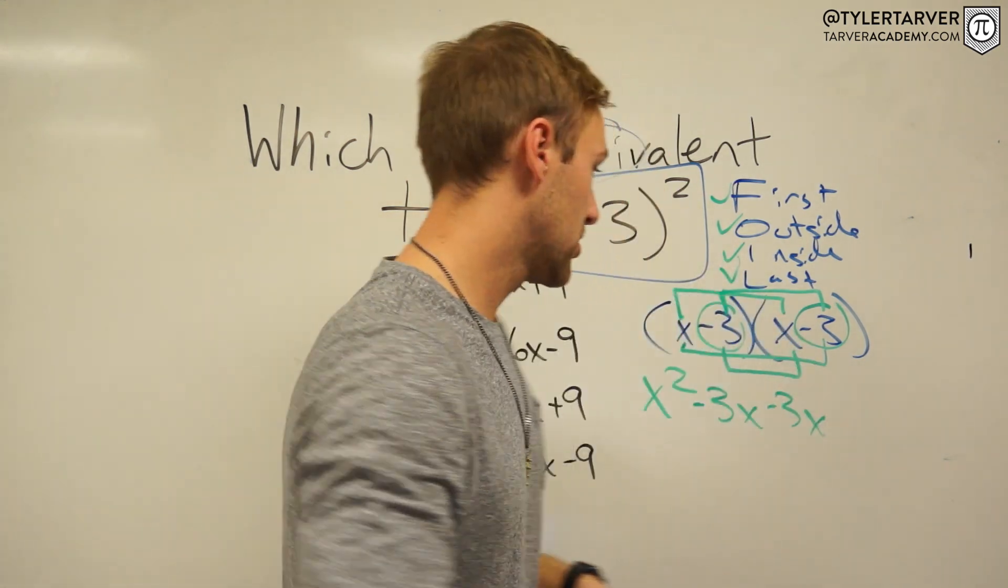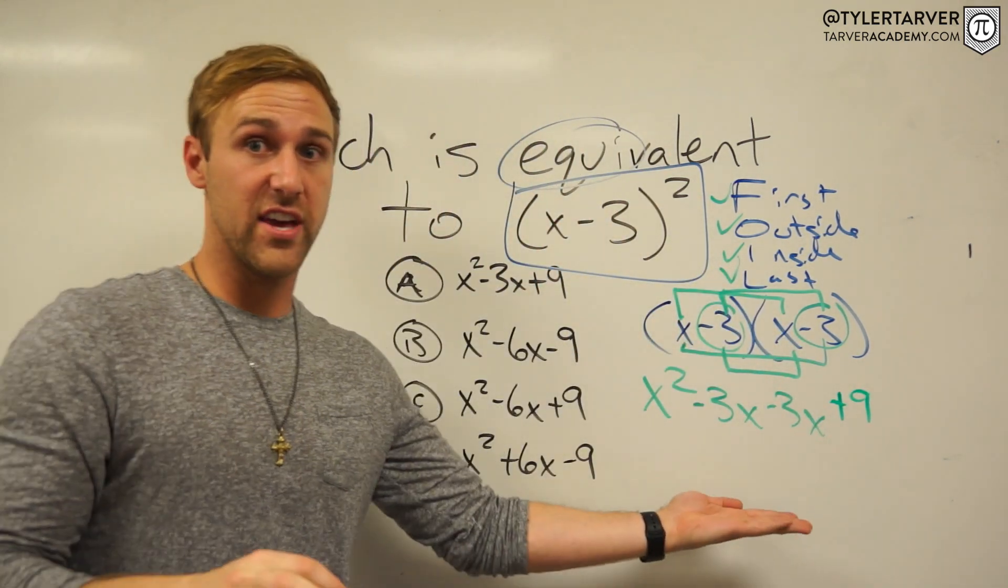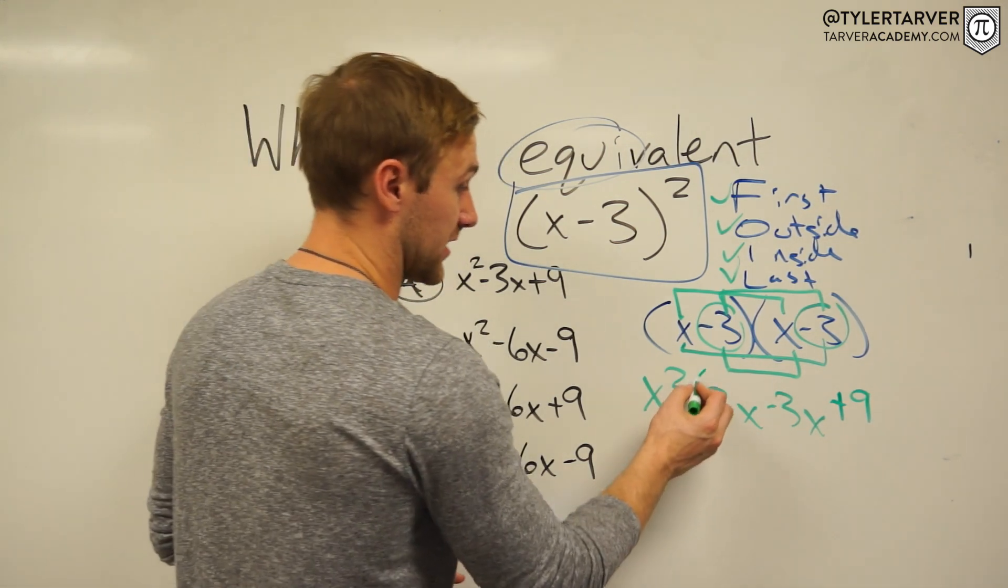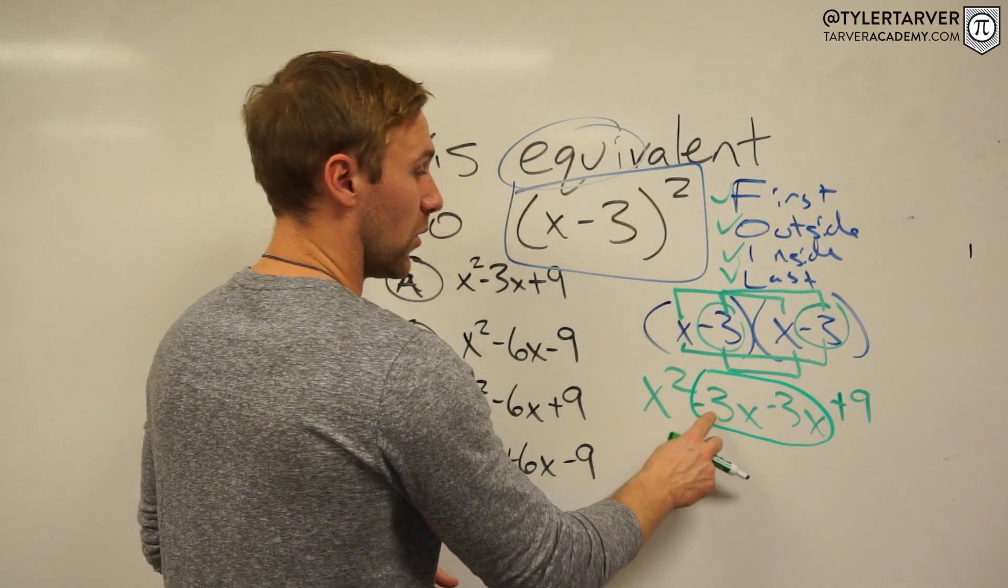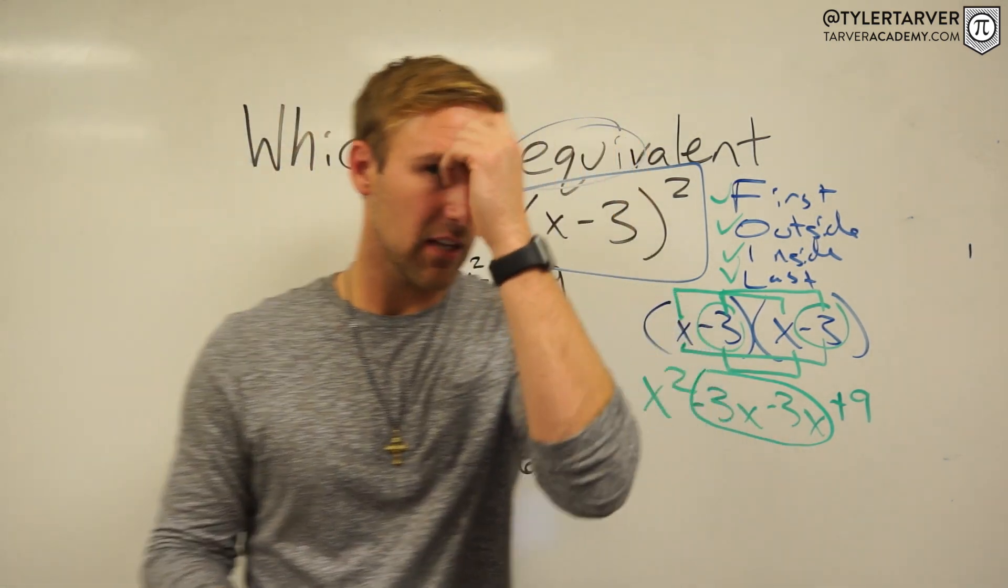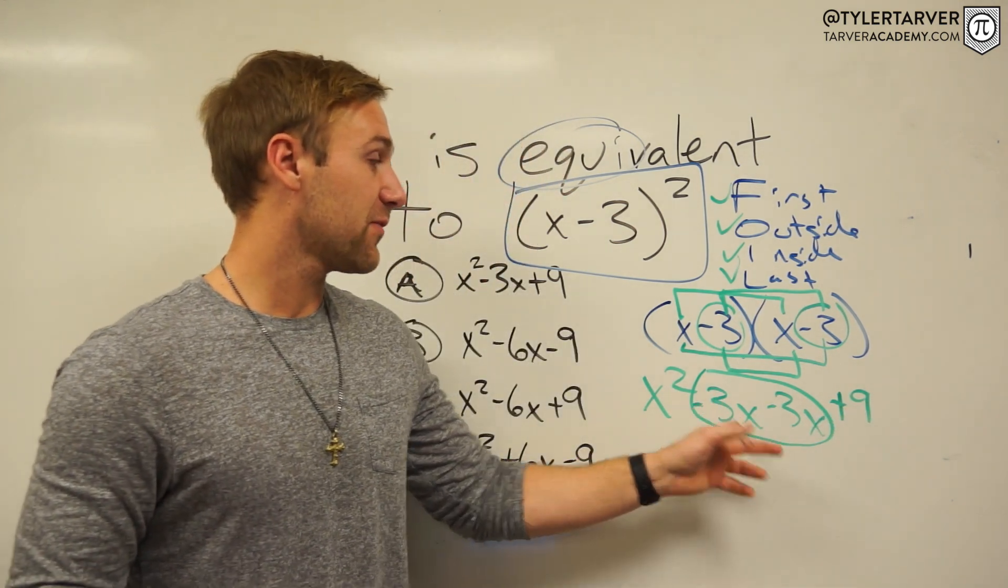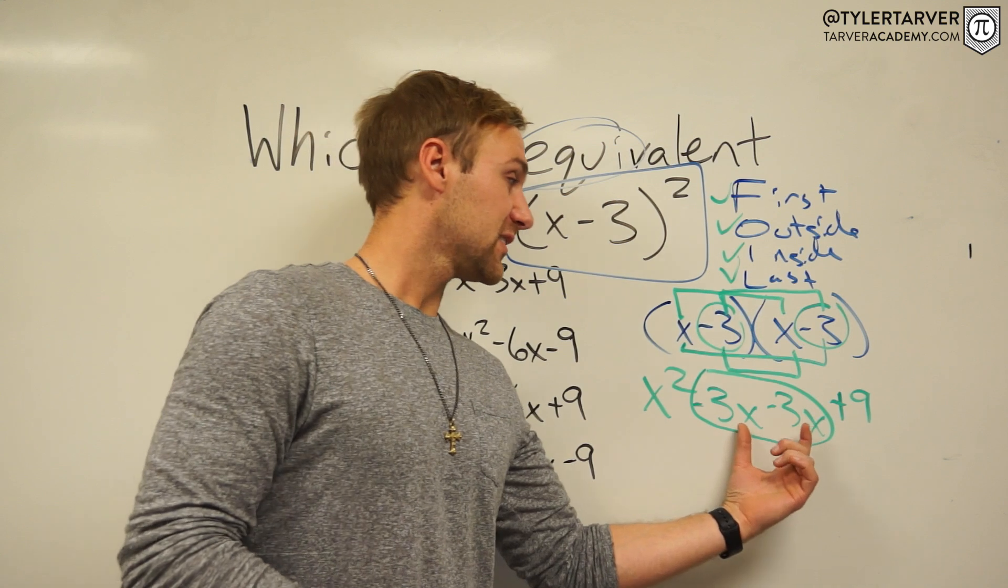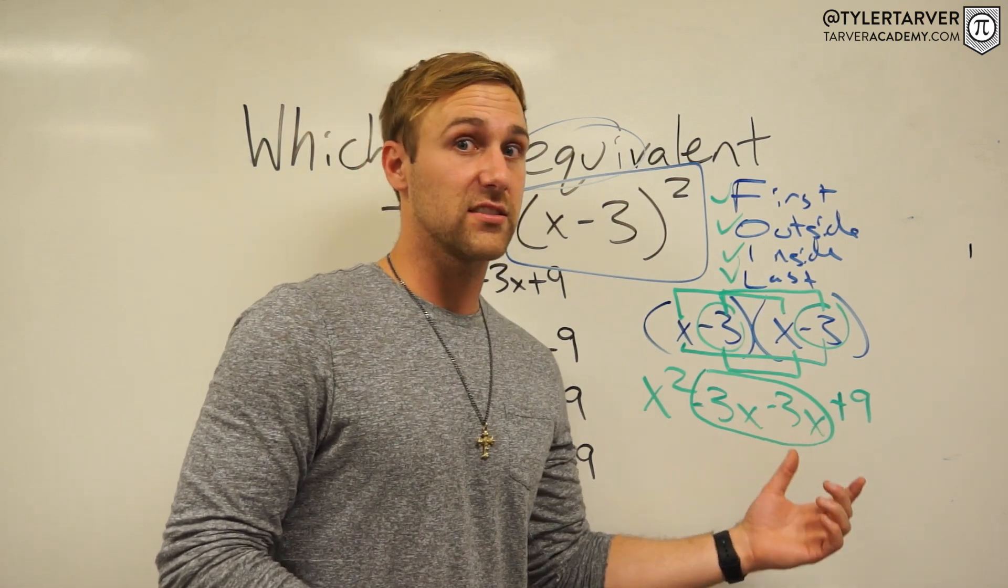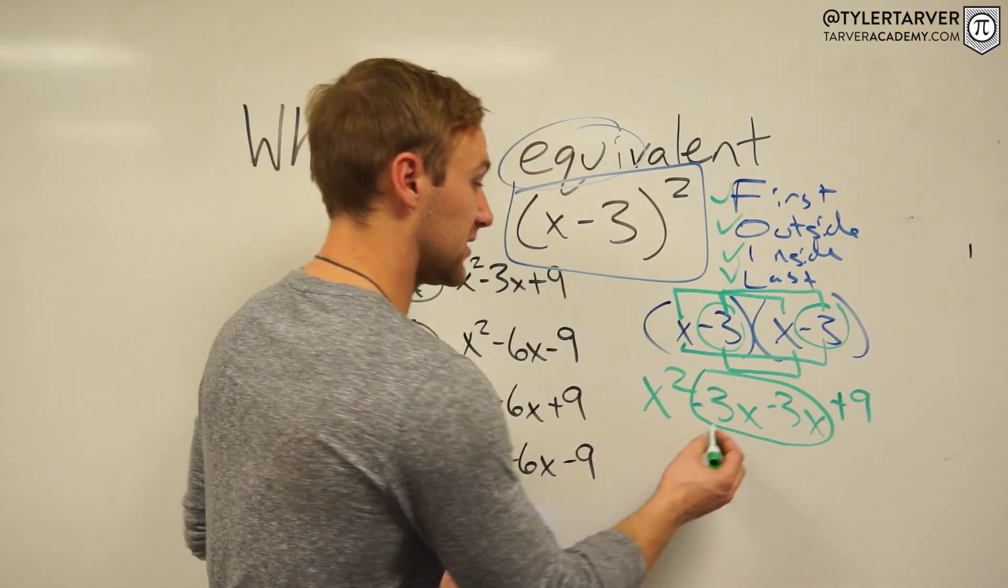Now, can I simplify this? Yes. The answer is yes. I can combine some like terms. What's negative 3x minus 3x? Now, where you're going to mess up, a lot of people are just like, x. No, it's not, because it's negative 3x minus 3x. Since these are both a number with the same variable, it's just x, it's not x², it's not anything crazy, they can be combined. So what's negative 3 minus 3? Negative 6x plus 9.